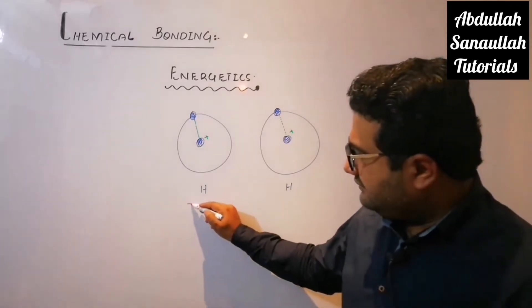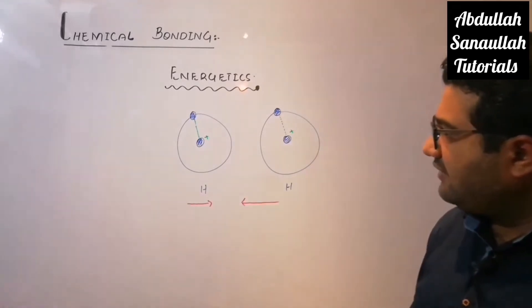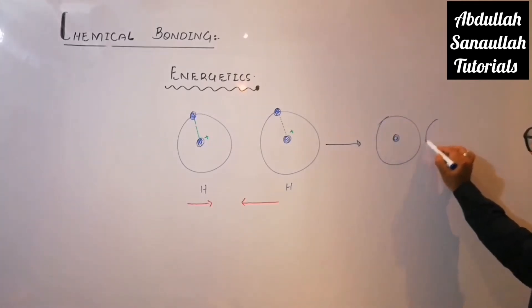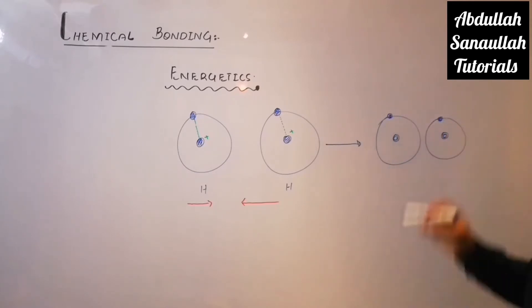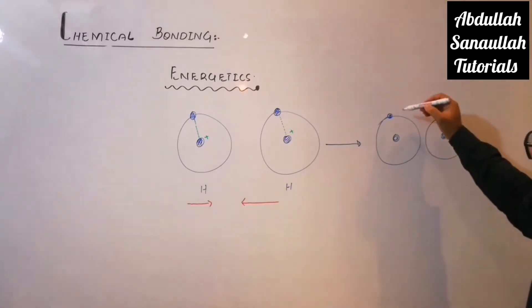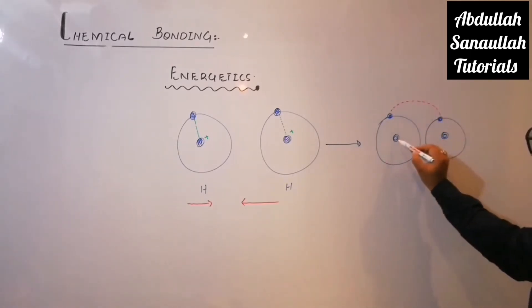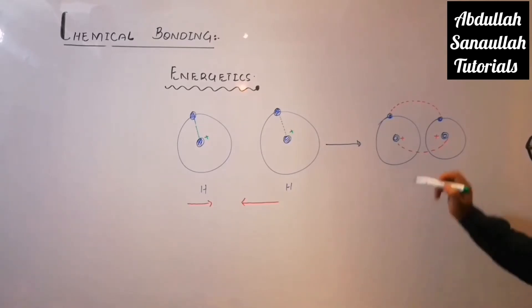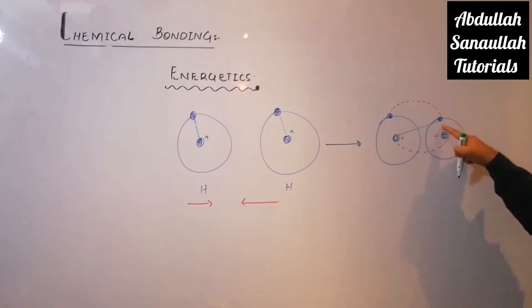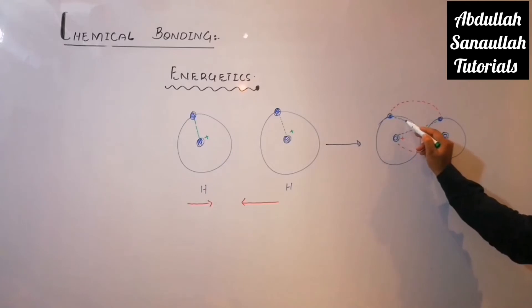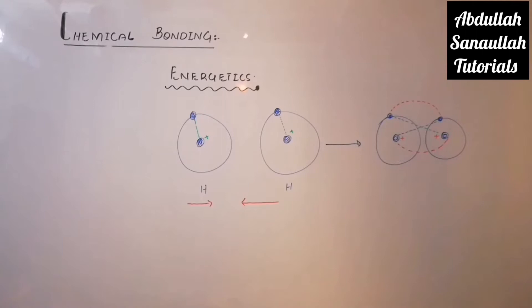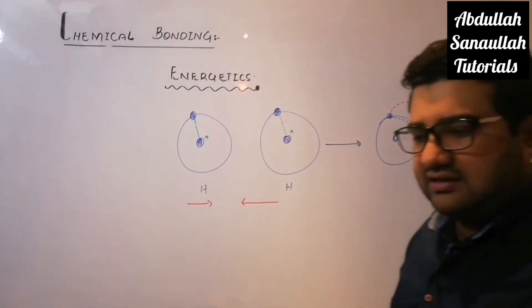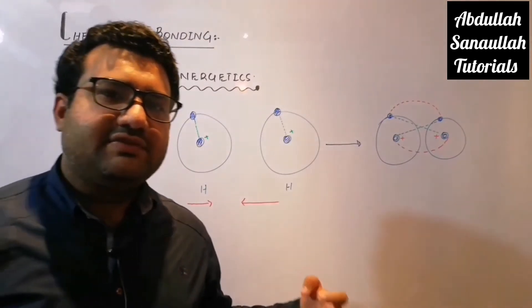But when these two atoms approach each other, some other forces will be observed. These two electrons and these two nuclei will repel each other. But the nucleus of one atom will attract the electron of the other atom, and vice versa. So you can see that two repulsive forces and two attractive forces have now developed between these two hydrogen atoms when they try to approach each other.